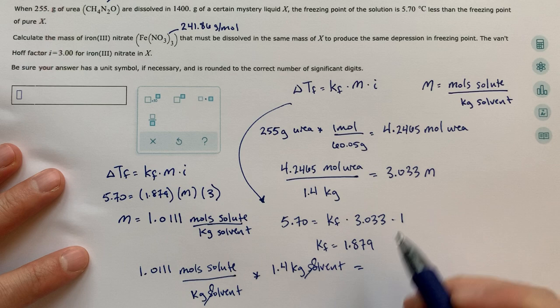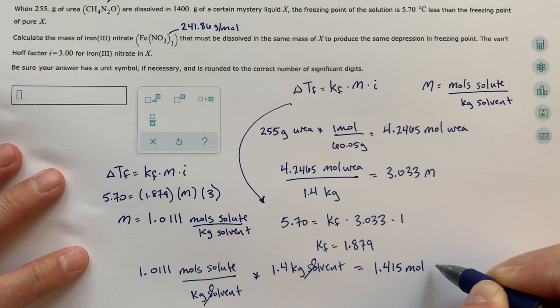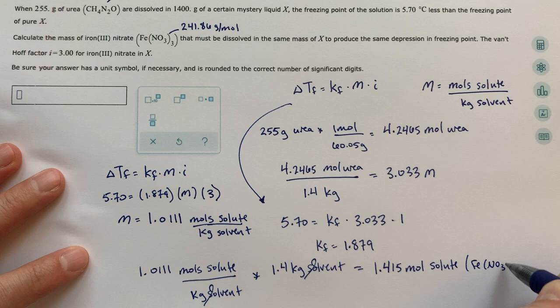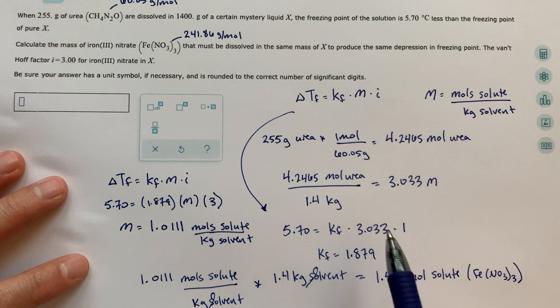This is going to leave us with 1.415 moles of solute, which in this case is that iron nitrate, right? Iron nitrate. So now we have the number of moles of iron nitrate.